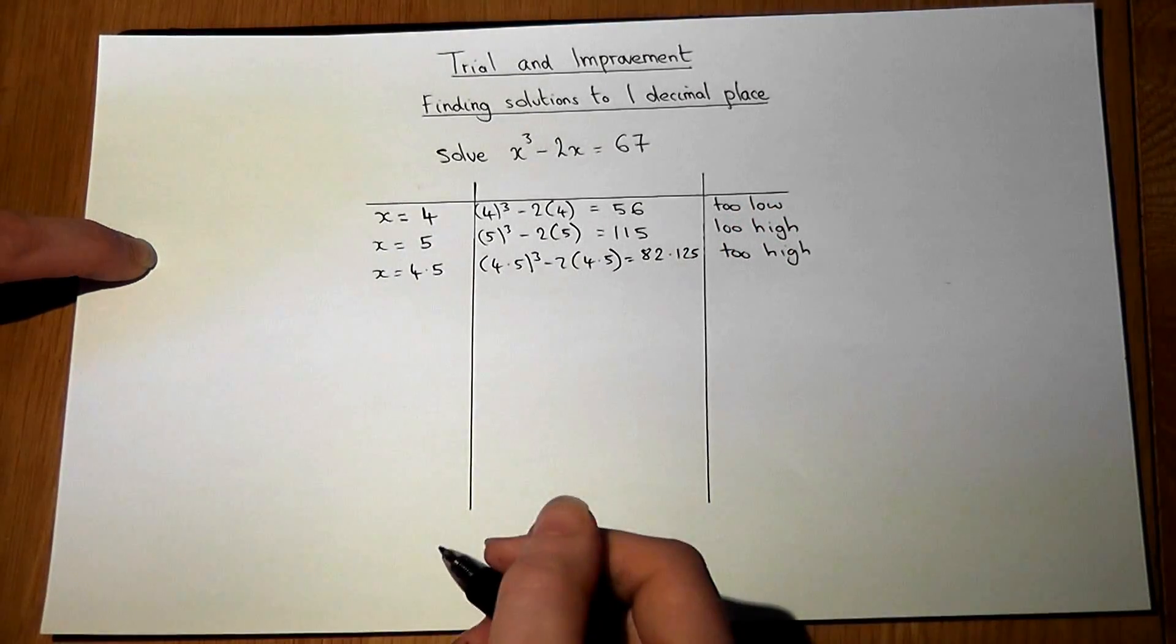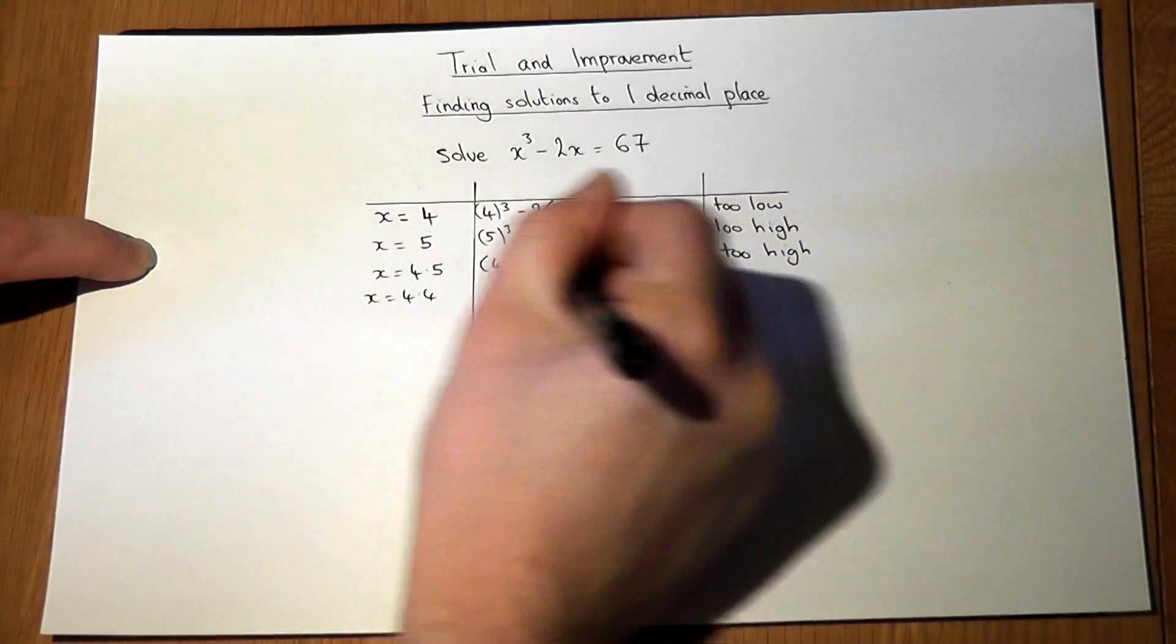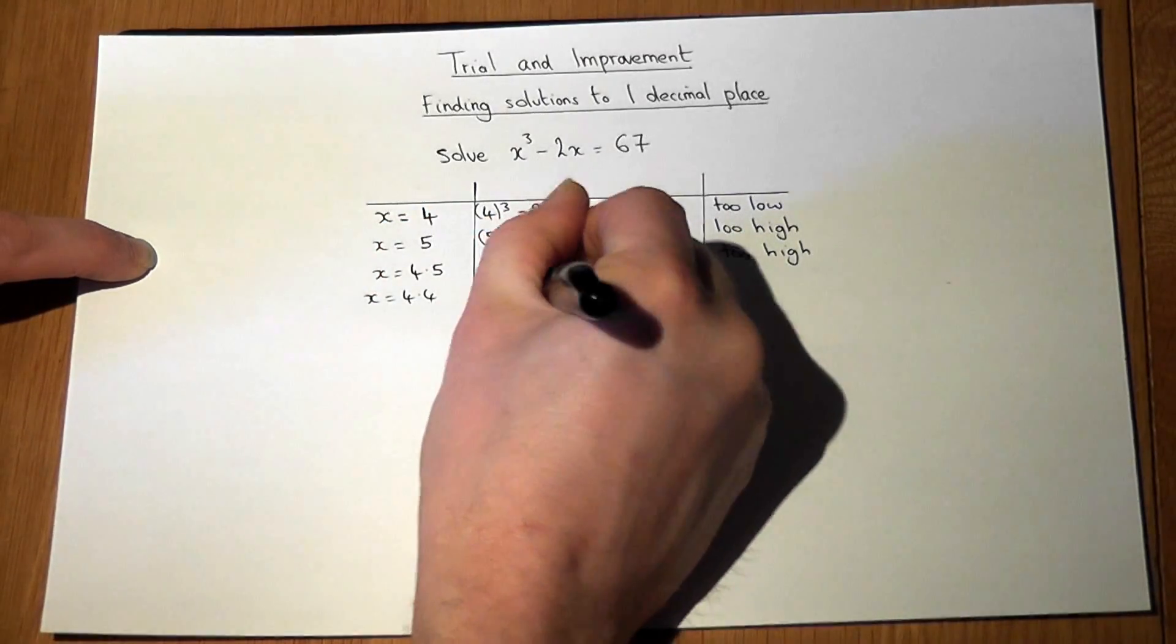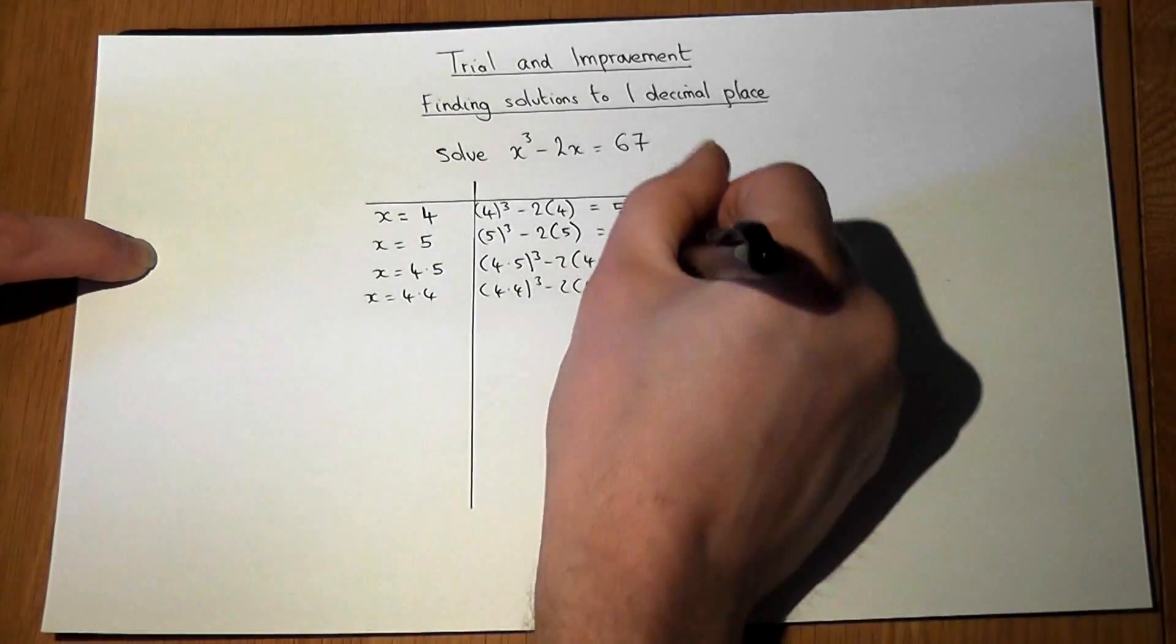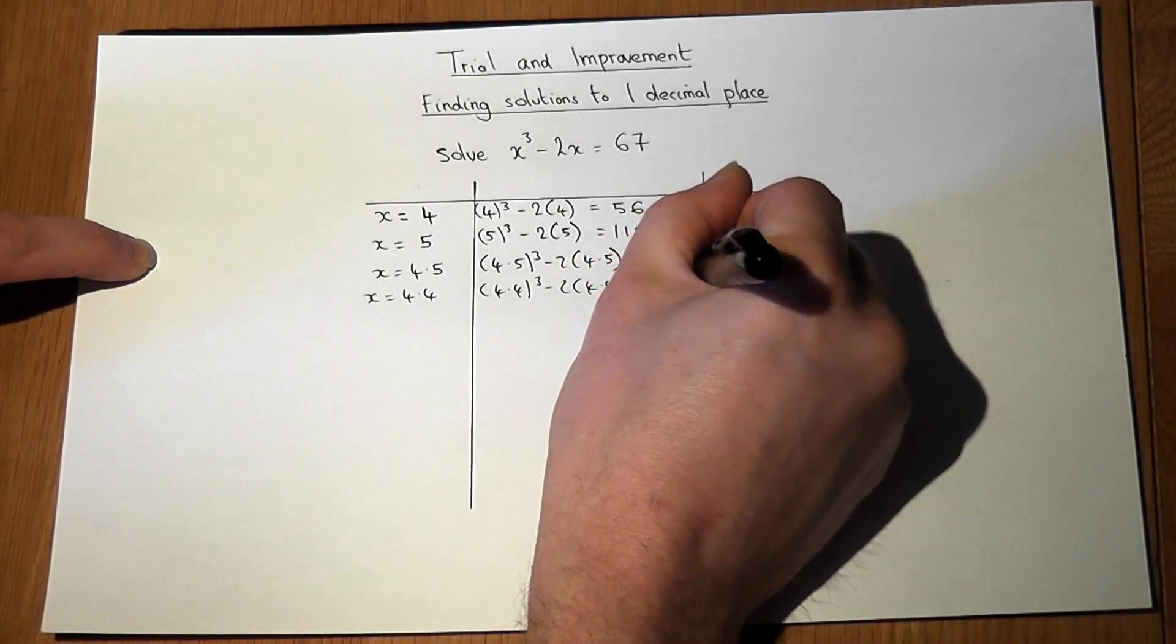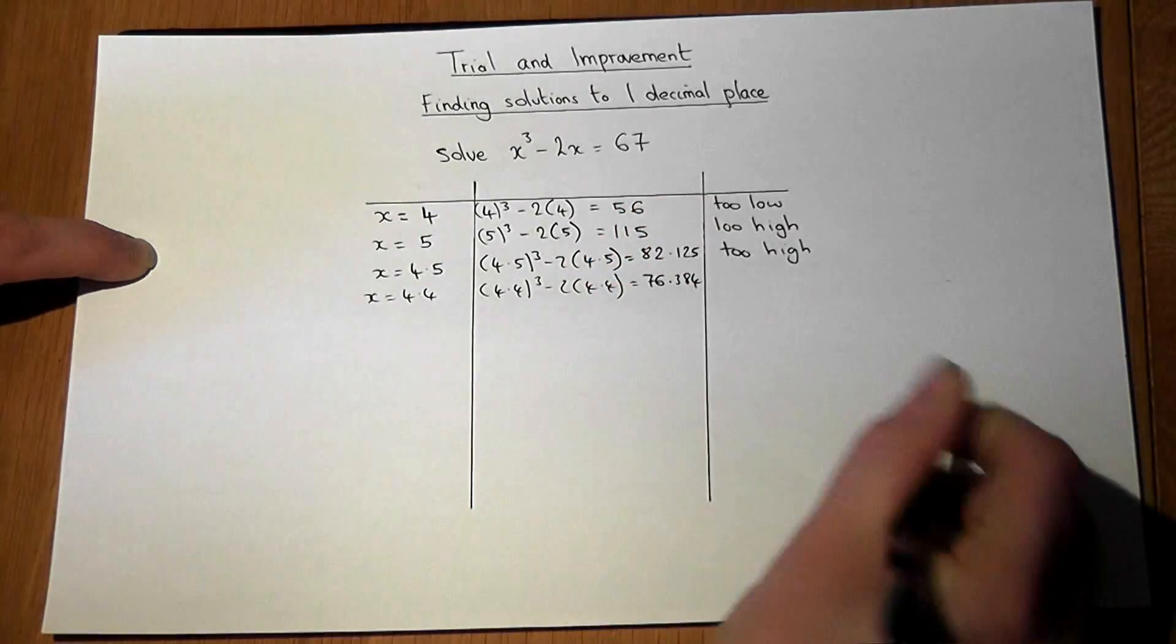So we keep on going. 4.4 gives us 76, so too high.